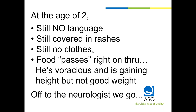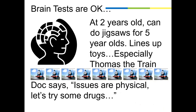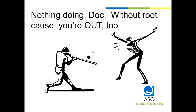He ate voraciously — you'd think he was a starving child. He could consume an entire box of cereal. He was getting taller but not gaining good weight and looked very starved. We went to a neurologist, and at two years old he could do jigsaw puzzles for five-year-olds upside down. He liked lining up toys, especially Thomas the Train. The neurologist said his issues are physical, not neurological, and suggested drugs. My husband and I looked at each other and said we don't know what's wrong with him — we weren't going to use drugs to treat something unknown.